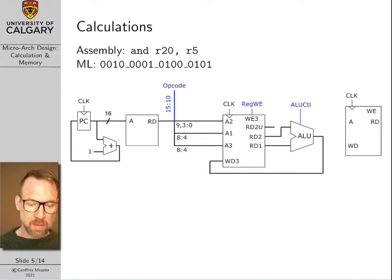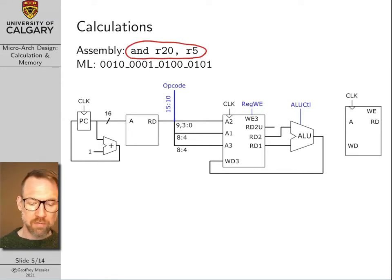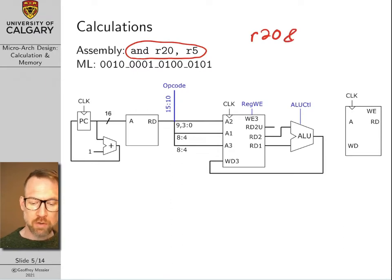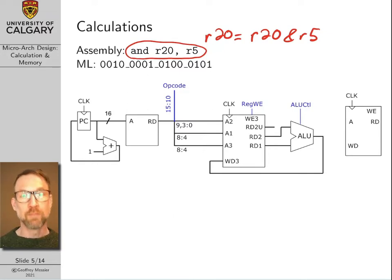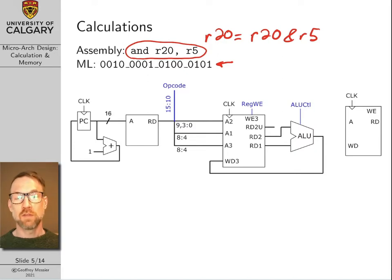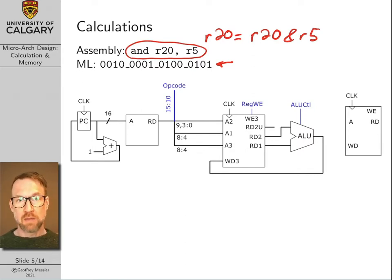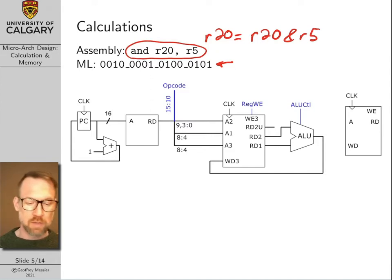Let's do a specific example. We're going to configure our microarchitecture to run the assembly language command AND R20, R5. This means we're going to take the bitwise AND of the 8-bit value stored in R20 and the 8-bit value stored in R5, and store the result back into R20. This is the 16-bit machine language instruction that will execute this exact command. The AVR instruction set manual, which I've uploaded to the course website, gives the 16-bit binary machine language instructions for every AVR machine language command — this binary string comes from there, not something I've made up.